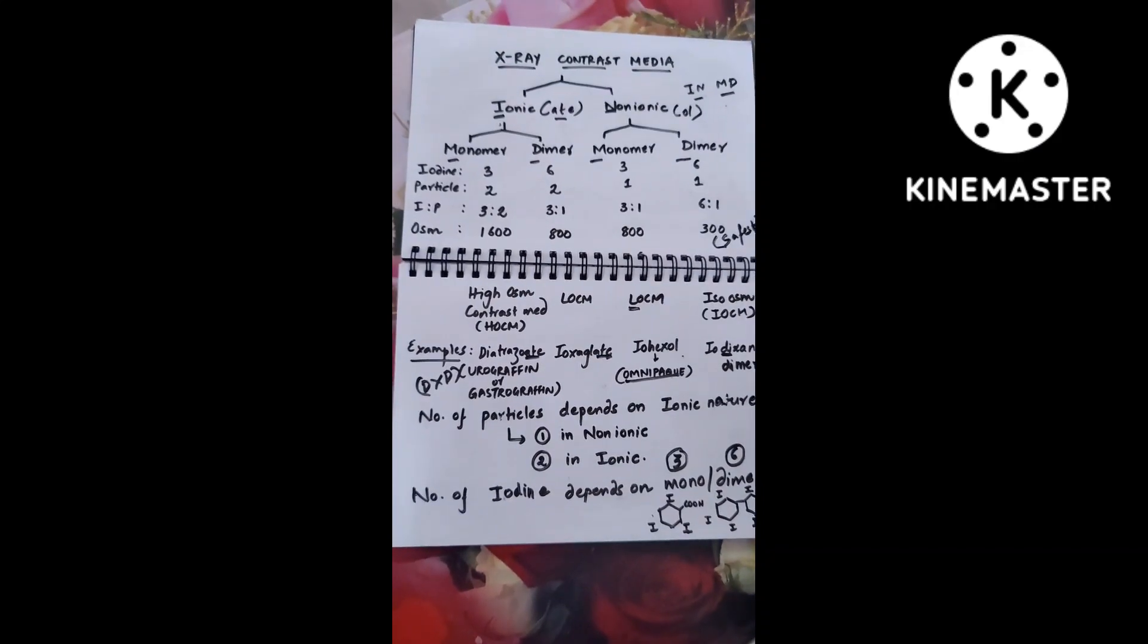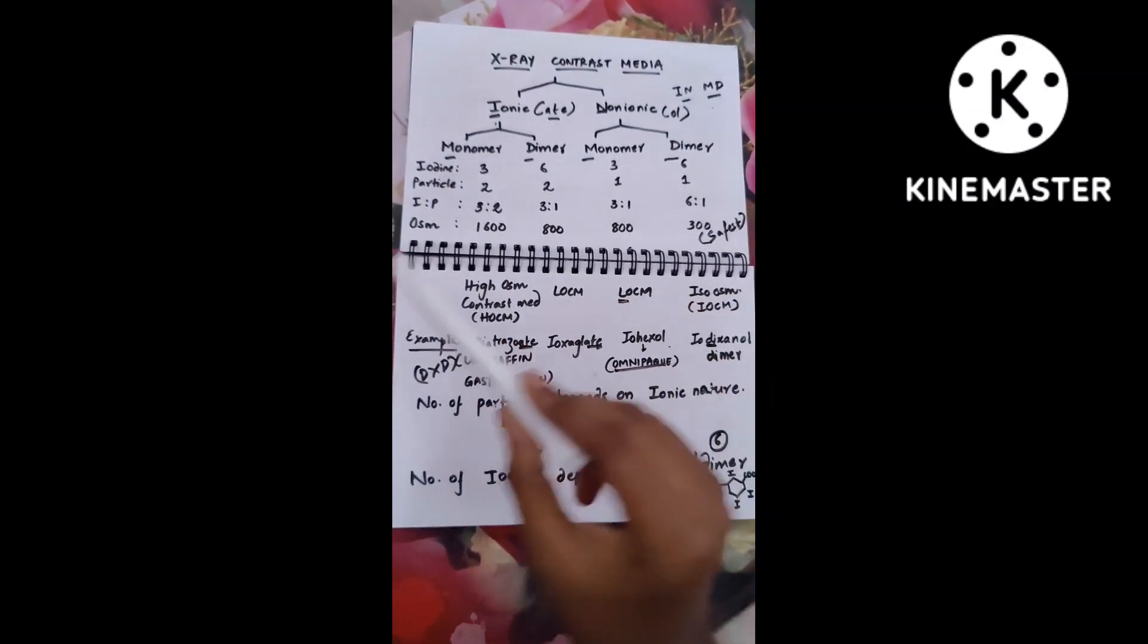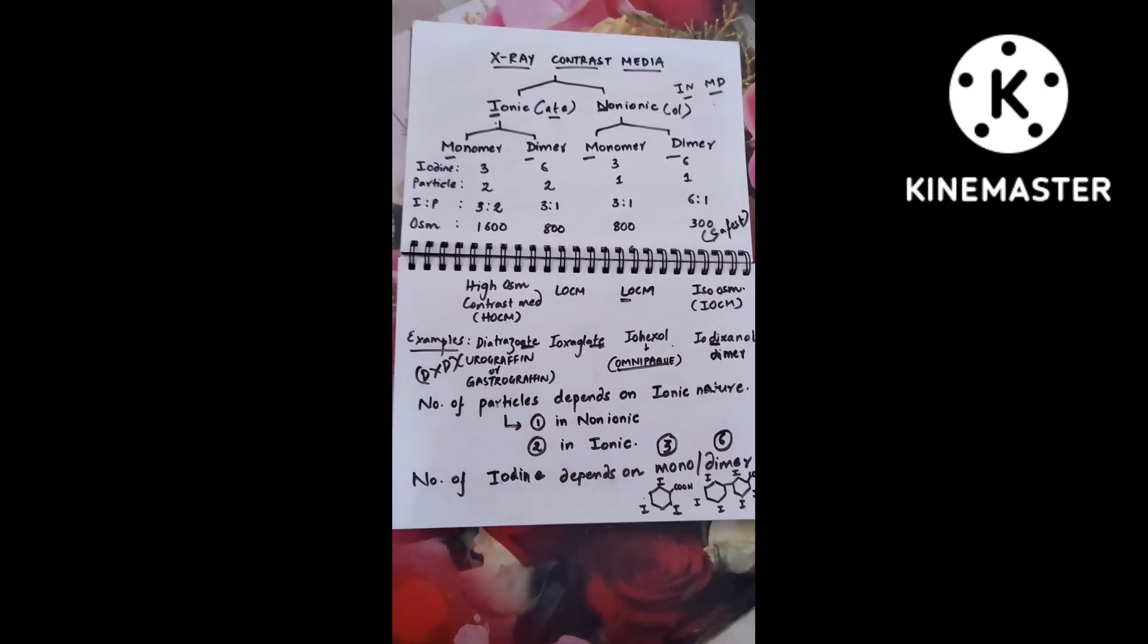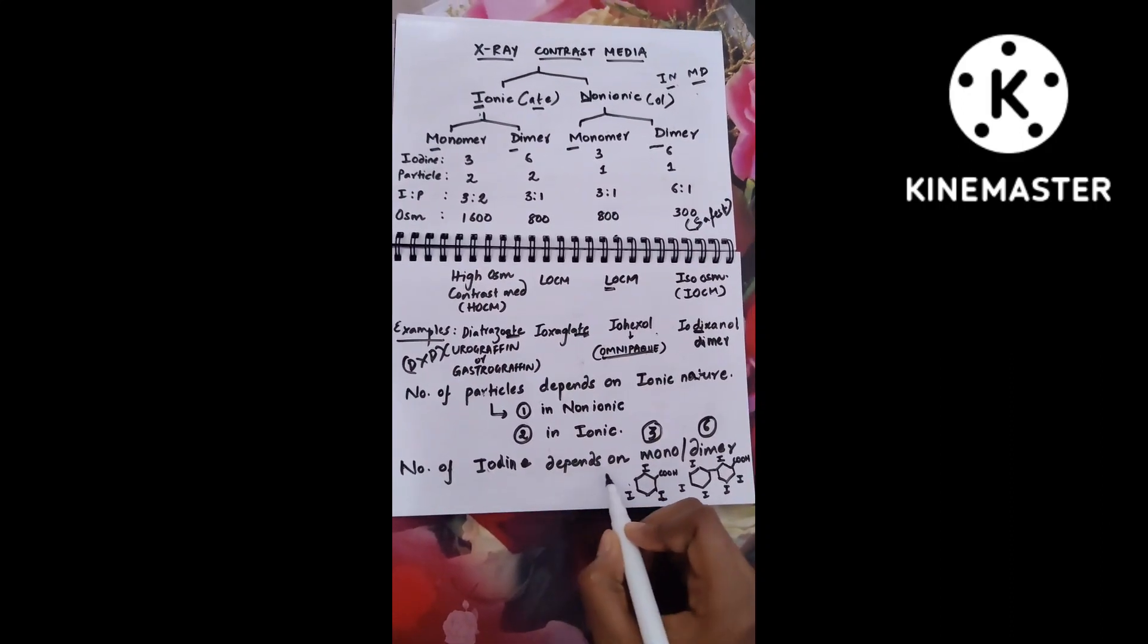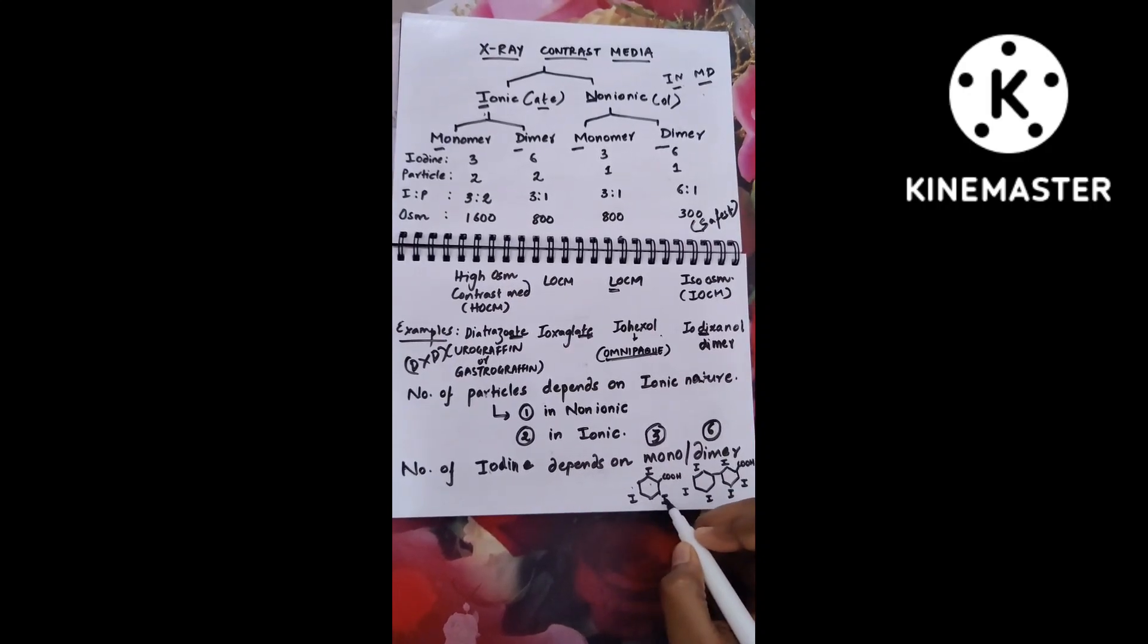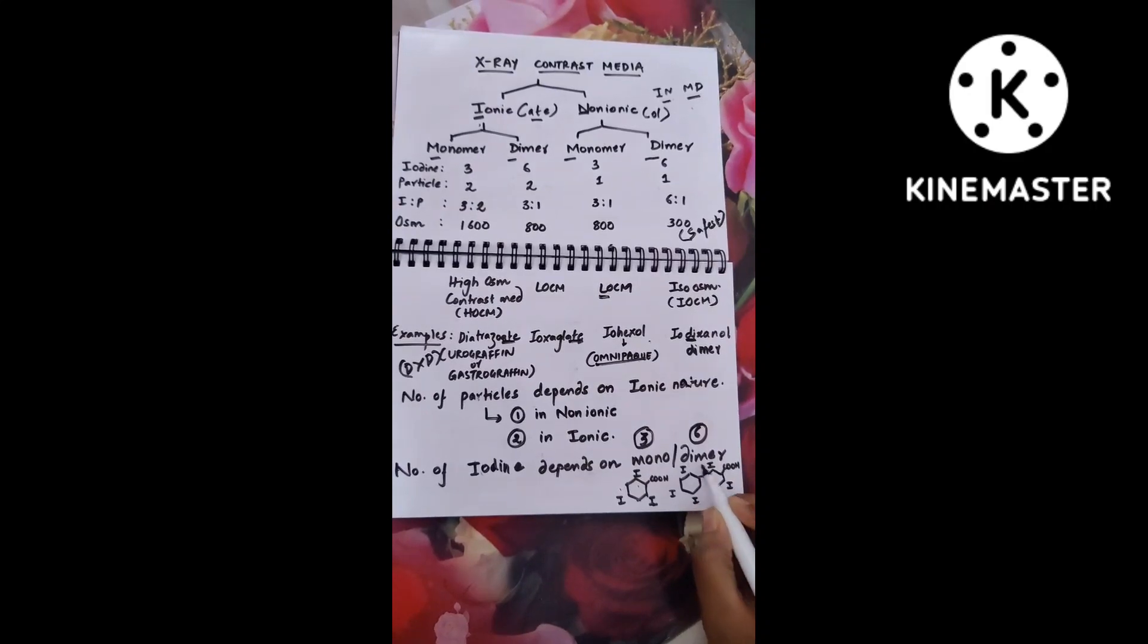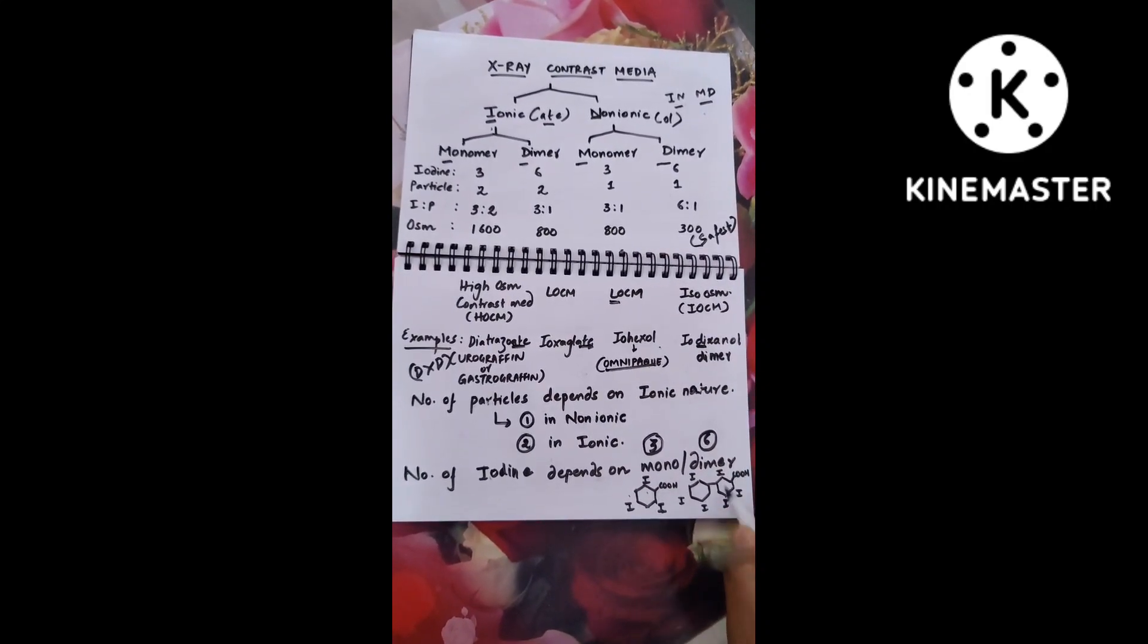Now let us understand a few terminologies like number of iodine and number of particles so that we can derive the iodine-to-particle ratio. If it is a monomer, you have one ring and three iodines attached to it. If you're talking about a dimer, it has two rings, so overall six iodines attached.